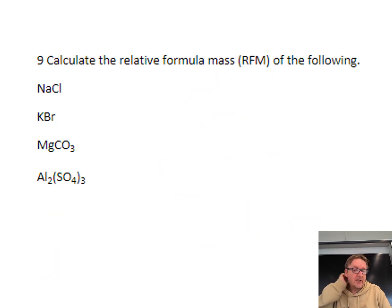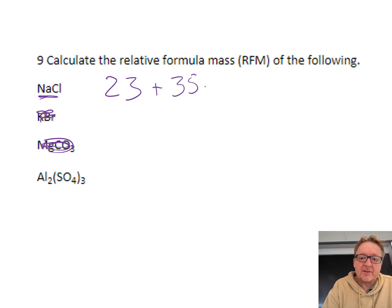Calculate the relative formula mass of the following. I'm going to do sodium chloride. You go to the periodic table, find the biggest number which is the mass number. For sodium it's 23, and for chlorine it's 35.5. To do the relative formula mass, I add 23 to 35.5, which is 58.5.